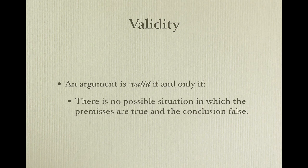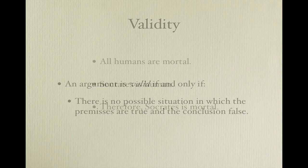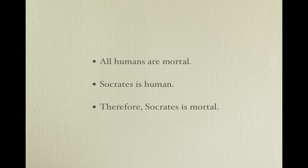To illustrate what we mean, let's return to our argument about Socrates. Is it possible for the premises — all humans are mortal, Socrates is human — to be true, and for the conclusion, Socrates is mortal, to be false? No. If those premises are true, then the conclusion must be true. The notion of validity allows us to judge whether a conclusion follows from the premises, regardless of the truth of those claims. And this helps us see weakness in someone's reasoning, and in our own, very quickly.